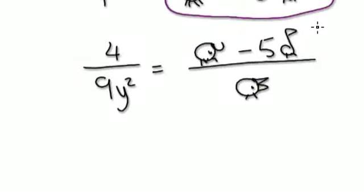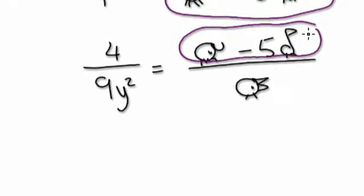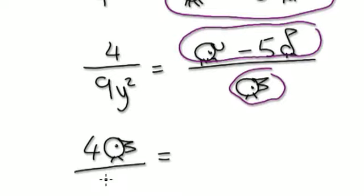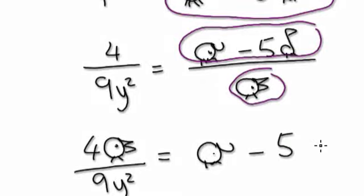Visualize it as one bubble dividing by a bubble here. We want to separate everything so that the giraffe could be on its own. So times the chicken to both sides. It would be four chickens over nine y squared equals elephant take away five — I'm going to just say giraffe rather than giraffes.